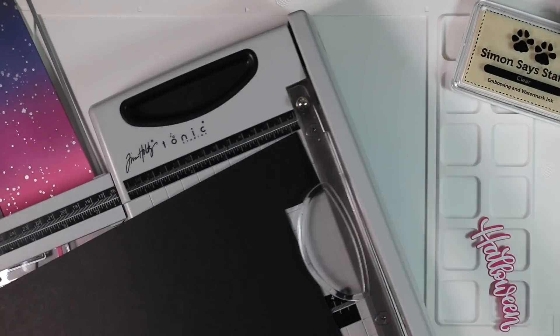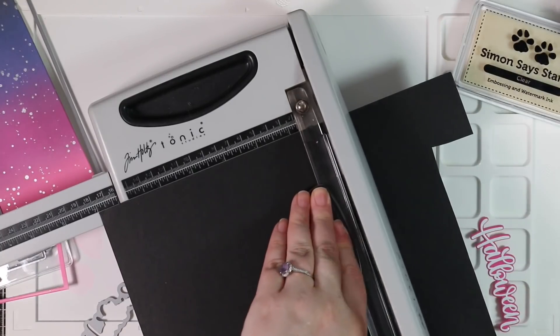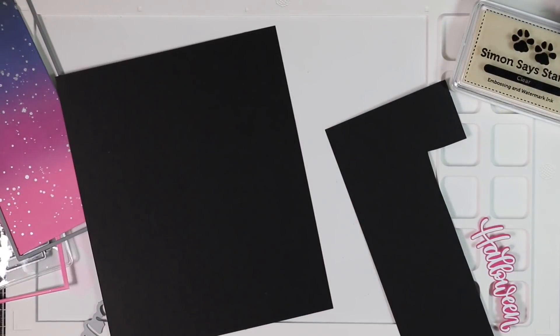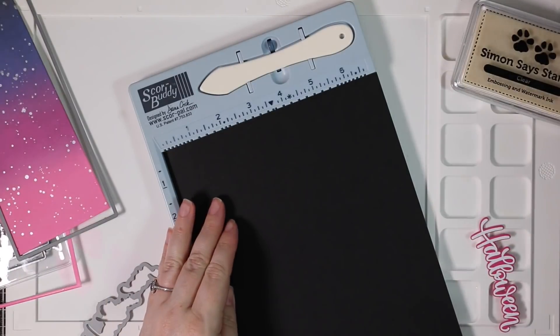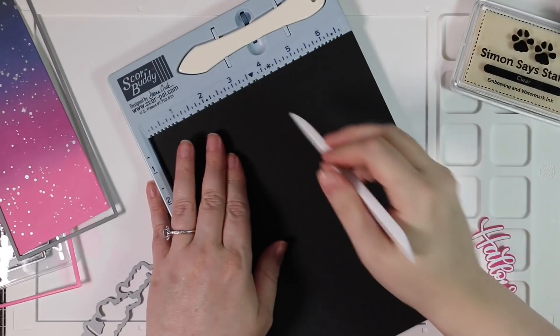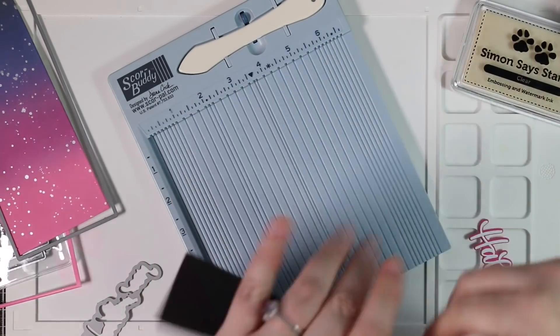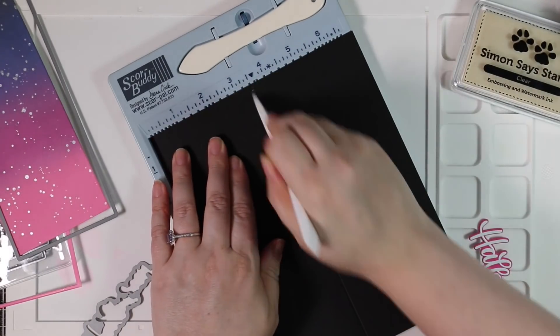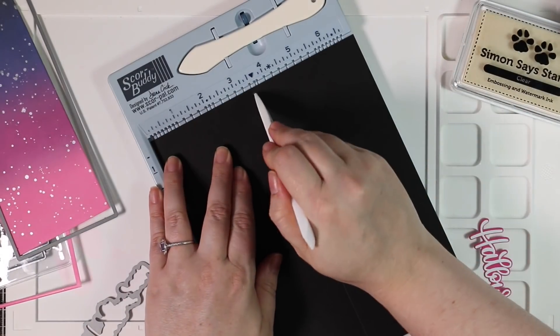And then my card base is black cardstock that I cut to seven inches. So it's going to be seven inches by eight and a half inches. So then I will score this at three and a half inches, and that will make this a three and a half inch by eight and a half inch slimline card. So I just line that up in my little score buddy here and then flip it around because the score buddy is technically too small for slimline cards.